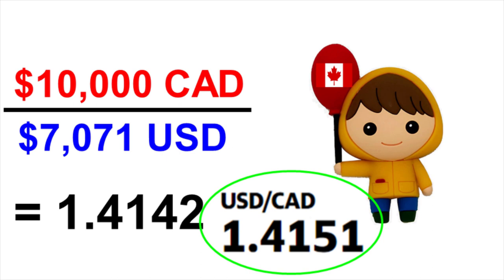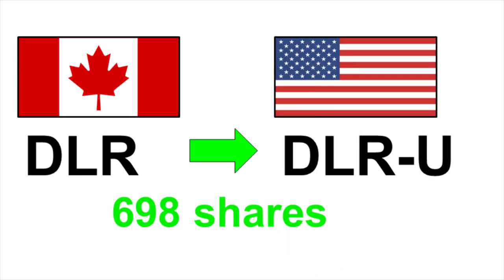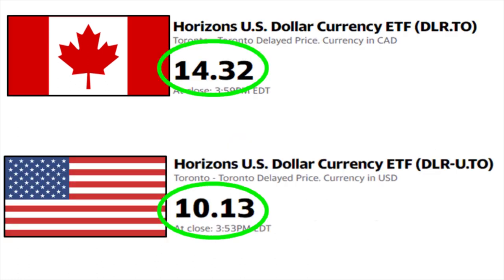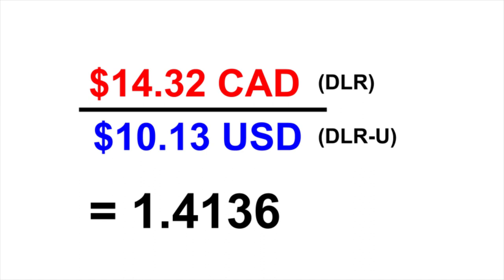But how did this happen? Essentially, your shares remained the same — the only thing that changed was the share price. Since we have the exact same investment on both the Canadian side and the US side, the only difference between the two share prices is the foreign exchange. If you divide $14.32 of DLR by $10.13 of DLR-U, you get an exchange rate of 1.4136.